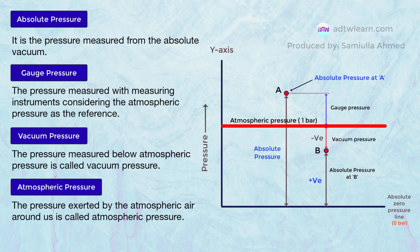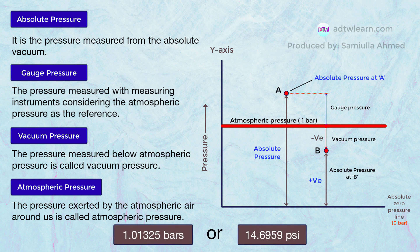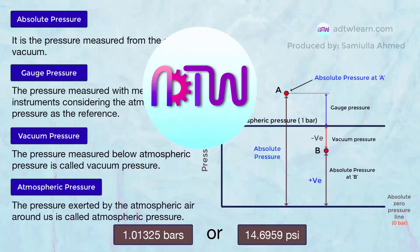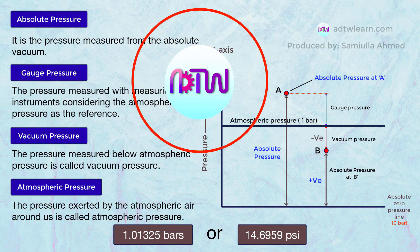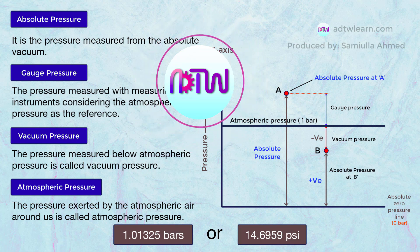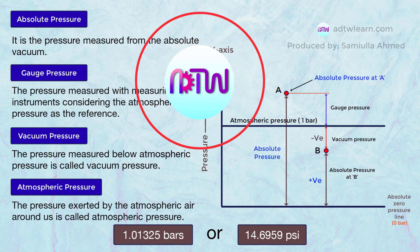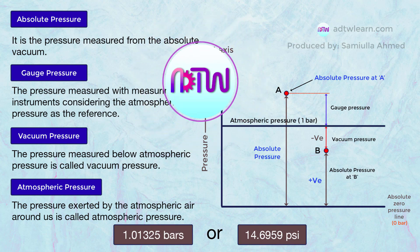The value of atmospheric pressure, or the pressure exerted by the air at sea level, is 1.01325 bars or 14.6959 psi. I hope this video helped you in understanding the difference between absolute, vacuum, gauge, and atmospheric pressure.